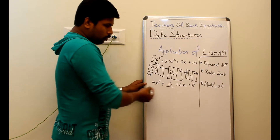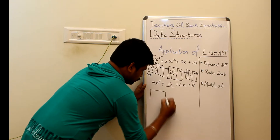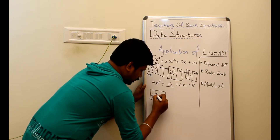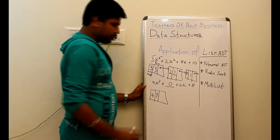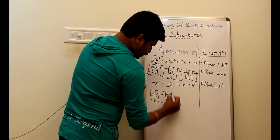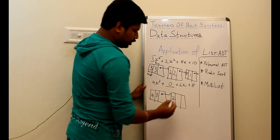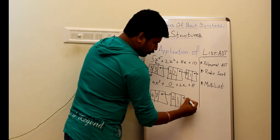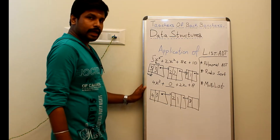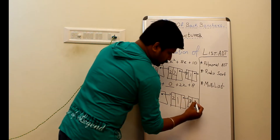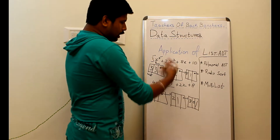Similarly, 4x³ + 2x + 8 is represented as: coefficient 4, power 3. In the next node, 2x has coefficient 2 and power 1. In the last element, the coefficient is 8 and there is no x value, so we assume x's power is 0. Since anything to the power 0 is 1, the power is stored as 0 and the last pointer is null.